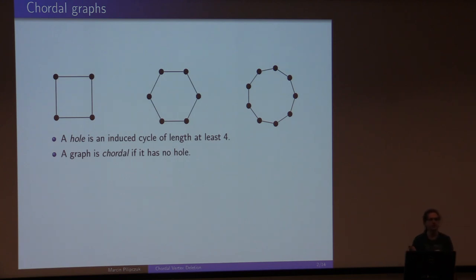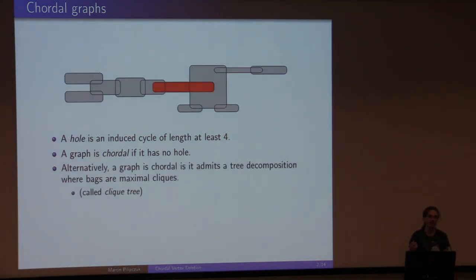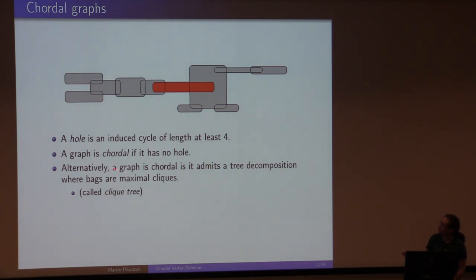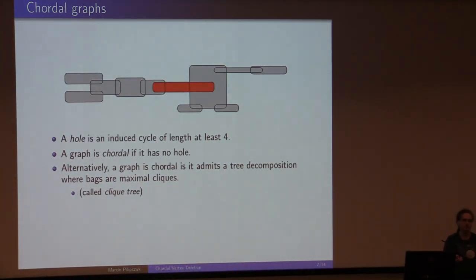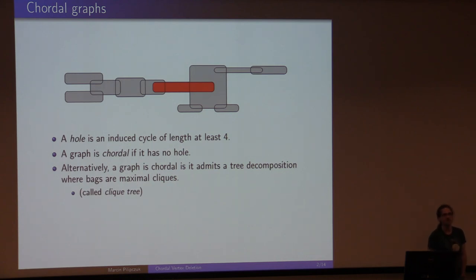It's much more useful to think of chordal graphs in a positive way — as a clique tree, a tree of cliques. You can prove that a graph is chordal if and only if it has a tree decomposition where every bag is a clique. Even stronger, you can take the family of all maximal cliques and assemble a tree decomposition out of them. There's a linear number of maximal cliques, and we call it in literature a clique tree.